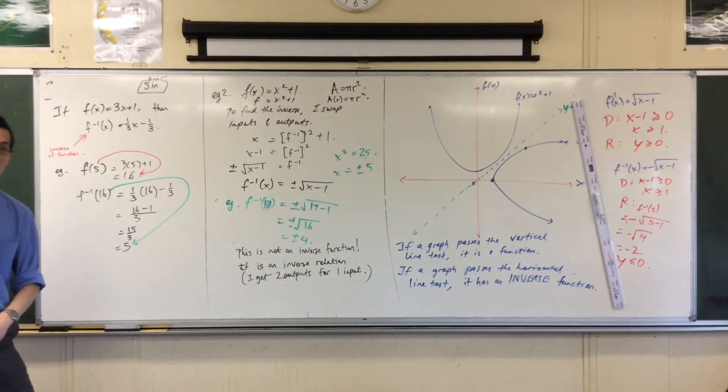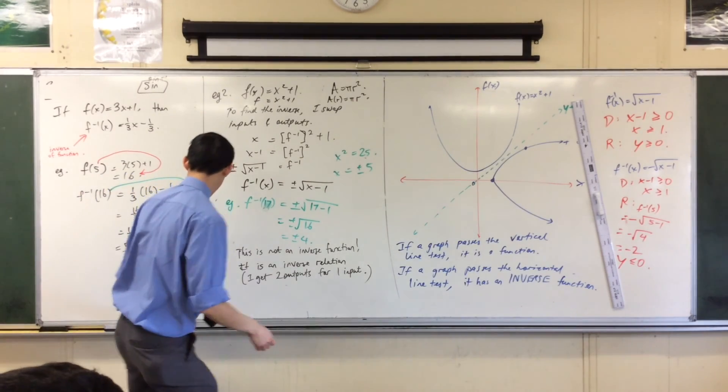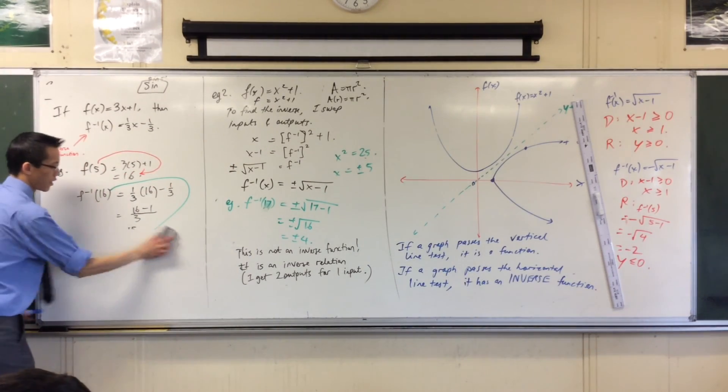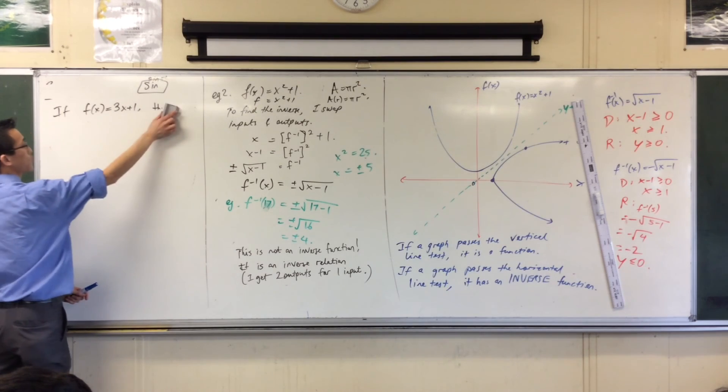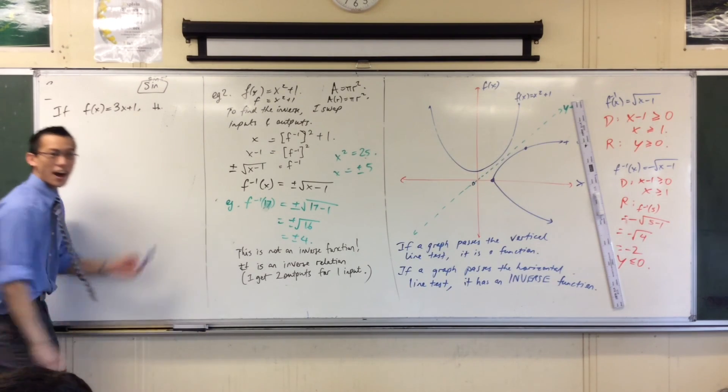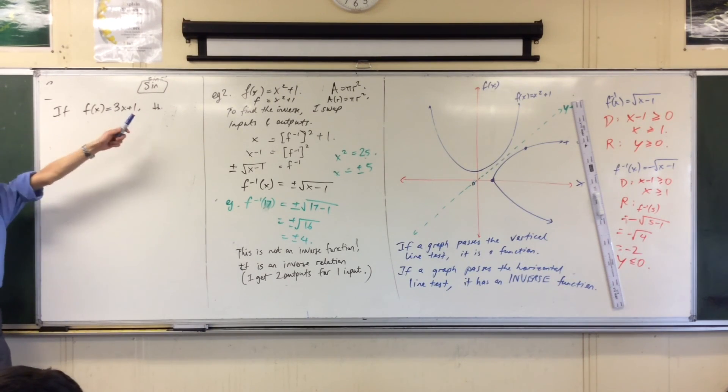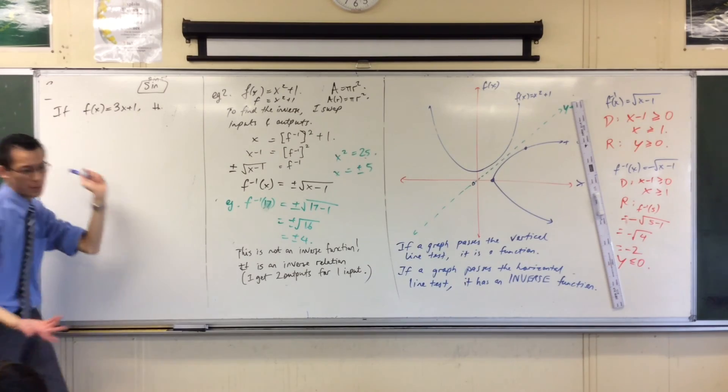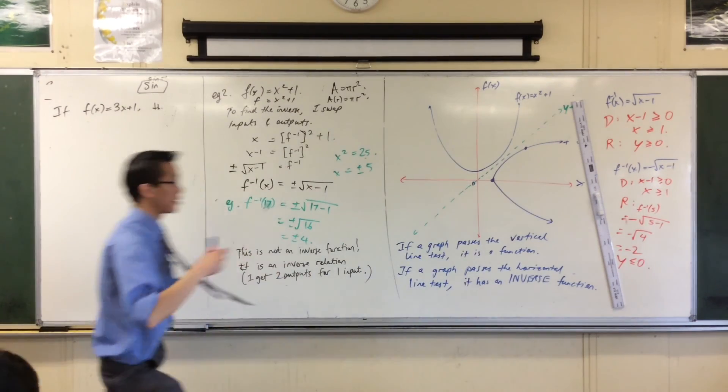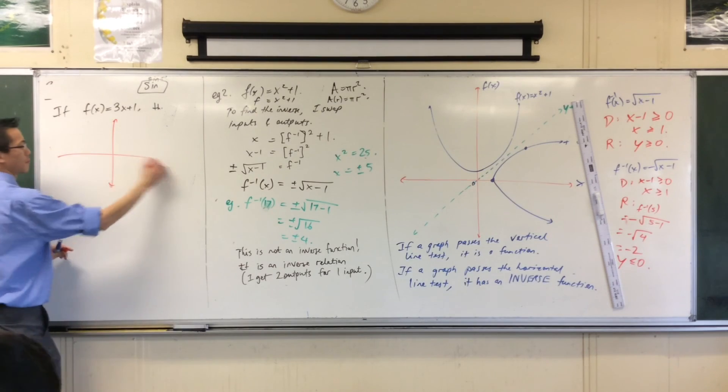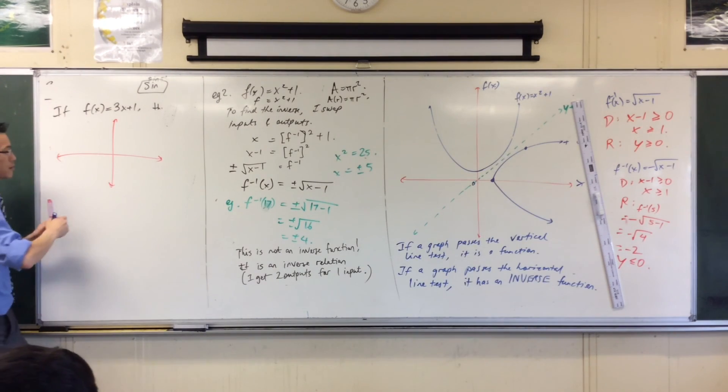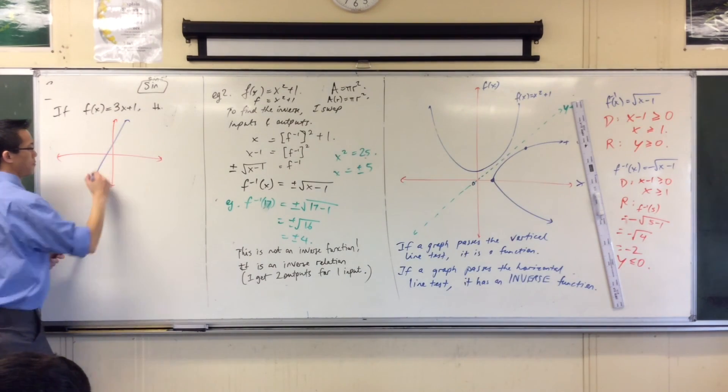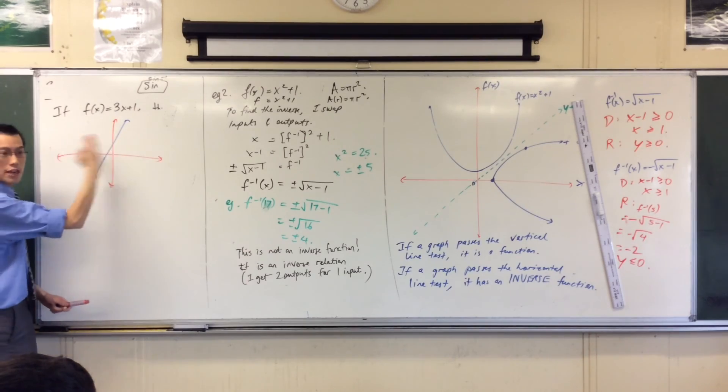Now, if we go back to our very, very first example, which was just a straight line, whatever it was, y equals 3x plus 1 or something like that. F of x equals 3x plus 1. Can you see? This passes the vertical line test, so it's a function. Here it is. You can put any vertical line through there you like. So, tick. It's a function.